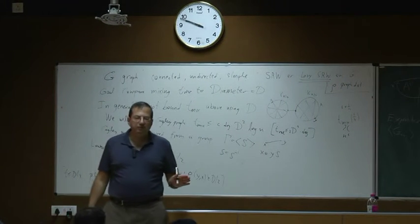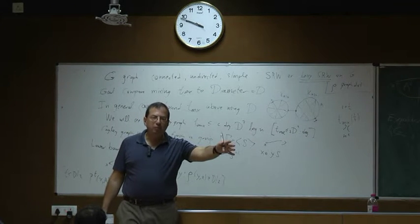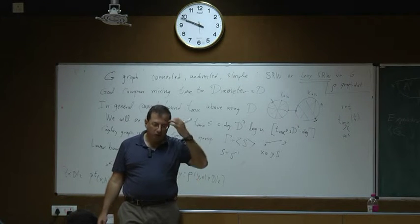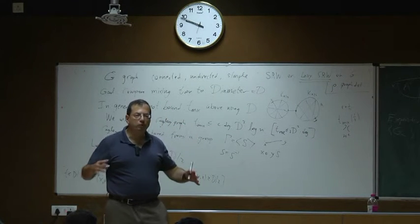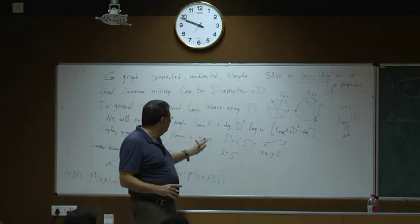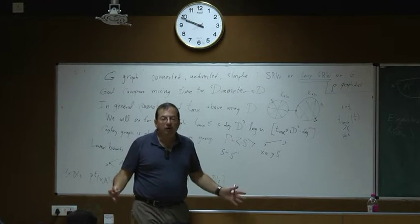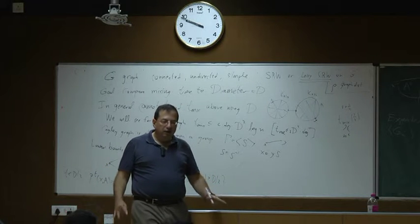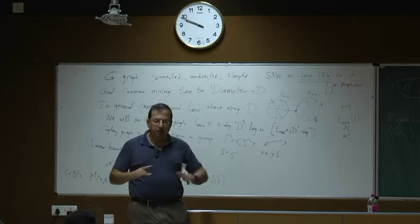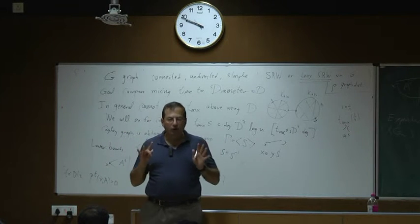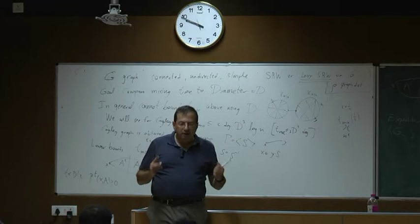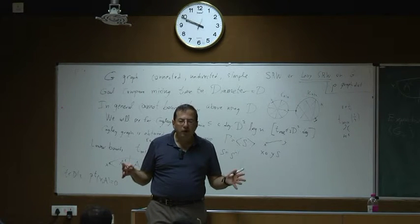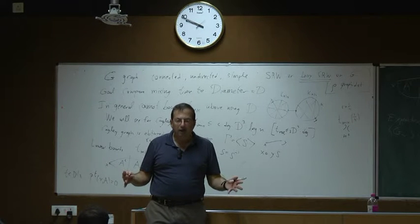Upper bounds need the Cayley graph structure, and I'm delaying those to later — they're more sophisticated. Lower bounds don't need any Cayley graph assumption. There is an easy lower bound of D/2, and this trivial lower bound is sometimes sharp. An example where it's sharp are expander graphs: these are graphs of bounded degree, you can take degree 3, yet they have a spectral gap bounded below.